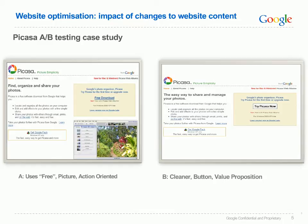If you look at the two pages there isn't much of a difference between them. Page A uses the word free, there's a picture in the corner, and the link is action oriented. With page B we've removed the picture, made the interface a little bit cleaner, changed the link to a button, and added a value proposition.